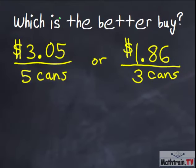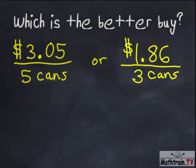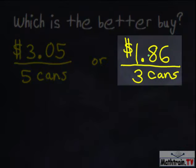We're going to try to find out which is the better buy. You can get five cans for $3.05 or you can buy three cans for $1.86.